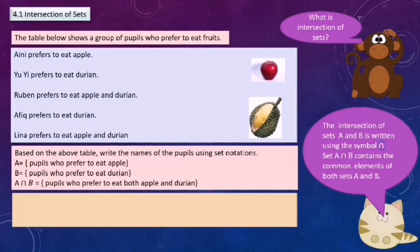The pupils who prefer to eat apple are Aini, Ruben, and Lina. So set A equals {Aini, Ruben, and Lina}.